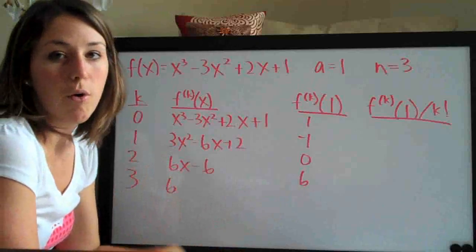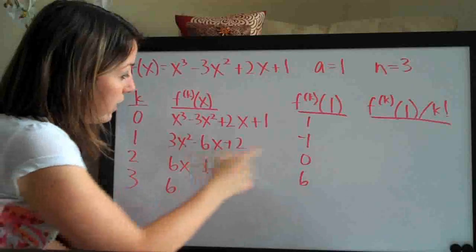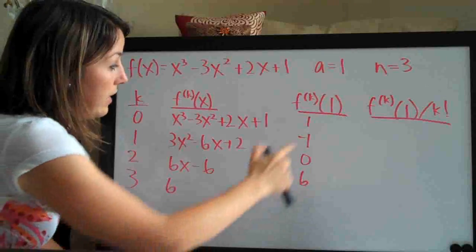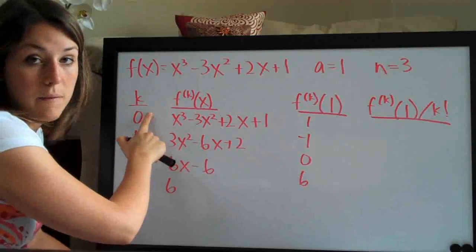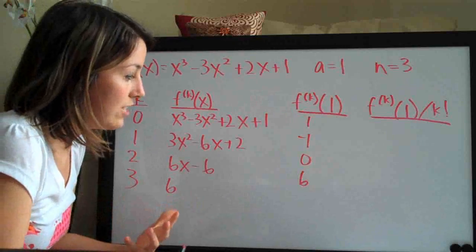And then this, you just plug in a, they always say about 0 or about 1. You plug that into each of these derivatives here. And then the fourth column, you just divide this, the number in this column, by the number in this column factorial.